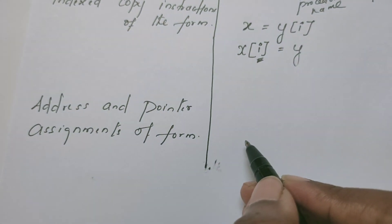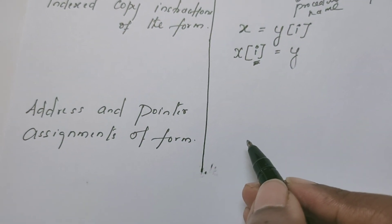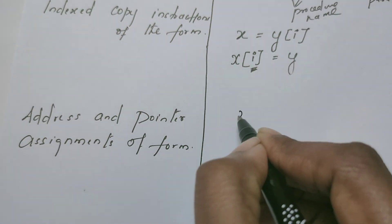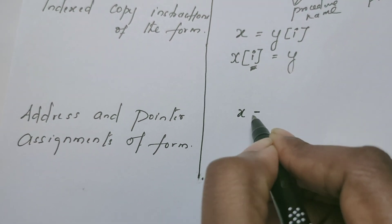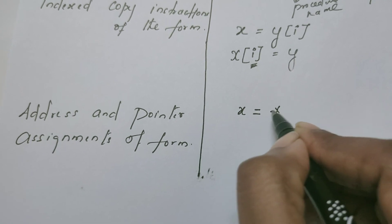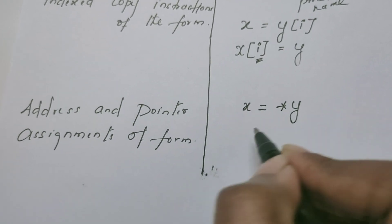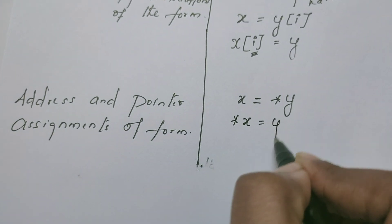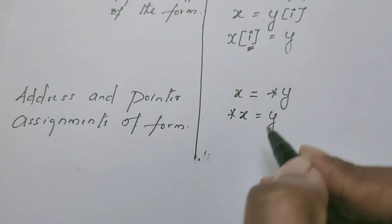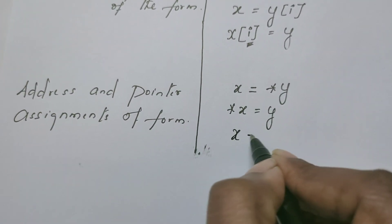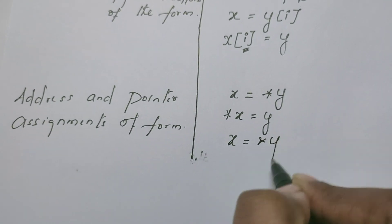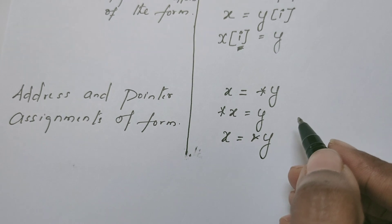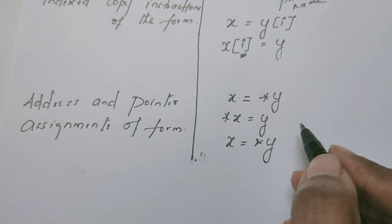Now the last one: how do we represent address and pointer assignments in three address code? It is also very simple, similar to C code: x is equal to star y, value at y. Star x is equal to y. This kind of statements are also available, or x is equal to address of y. These kind of statements are also available while converting high-level language into three address code.